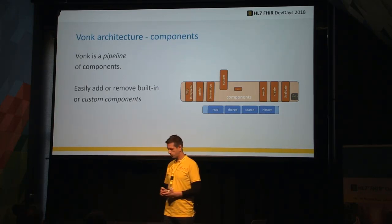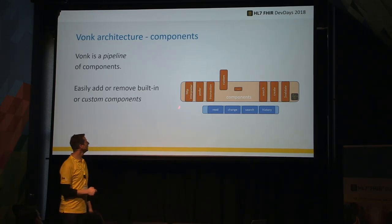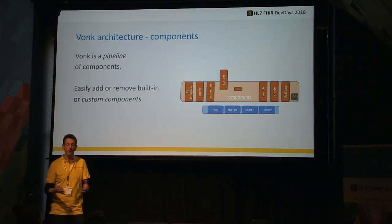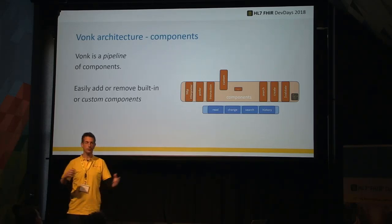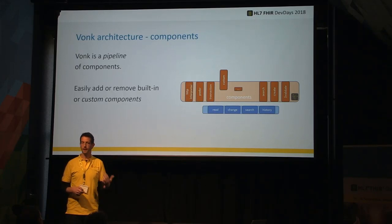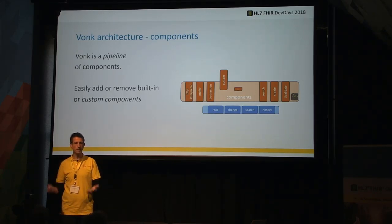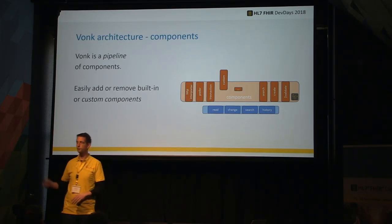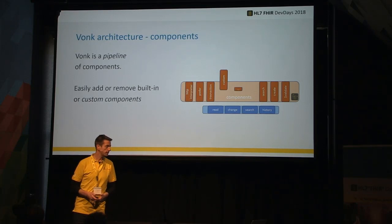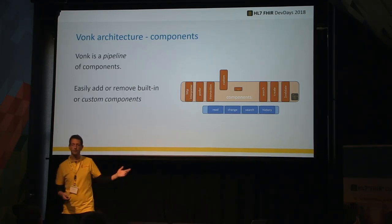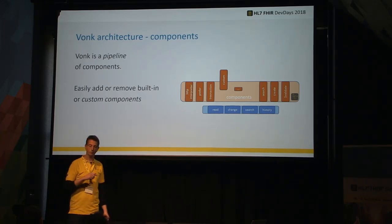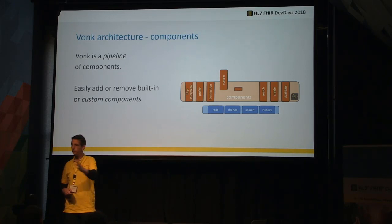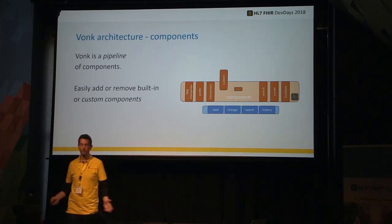How does it work with these components? It could start with an HTTP interpreter — we know what the FHIR API looks like, we get an HTTP request in, and we translate it. If it's a GET with a resource type and an ID, it's probably a read interaction. There could be SMART and FHIR scopes, extra search parameters — we translate that for you. There's a prefer handler, transaction support, search, create — all these operations are separate components.